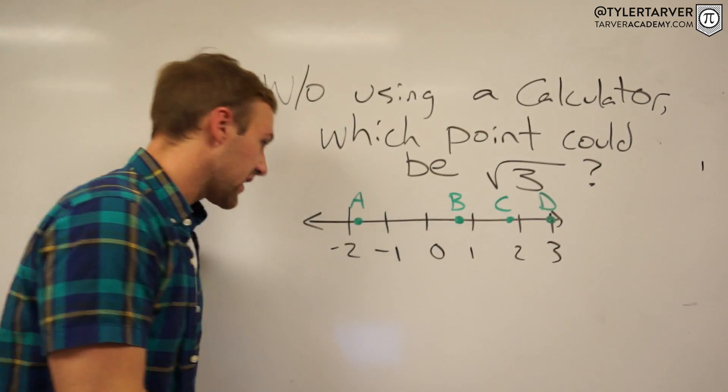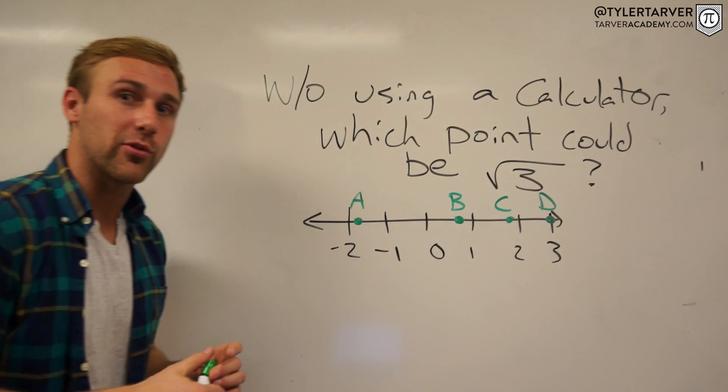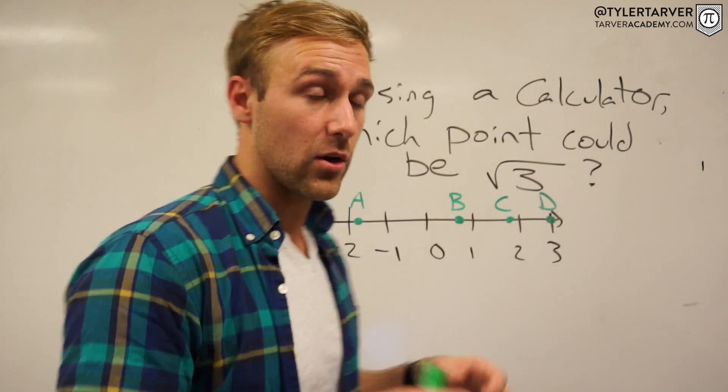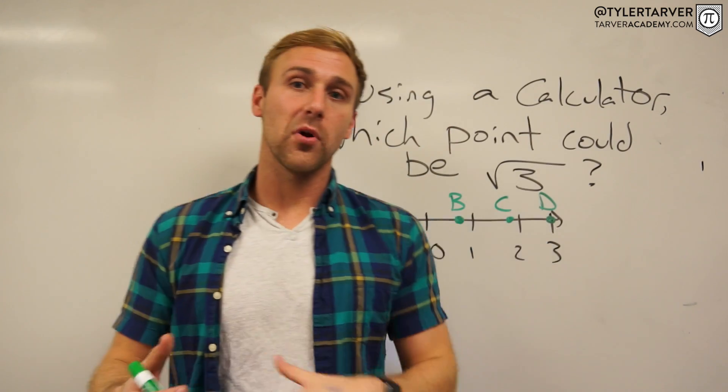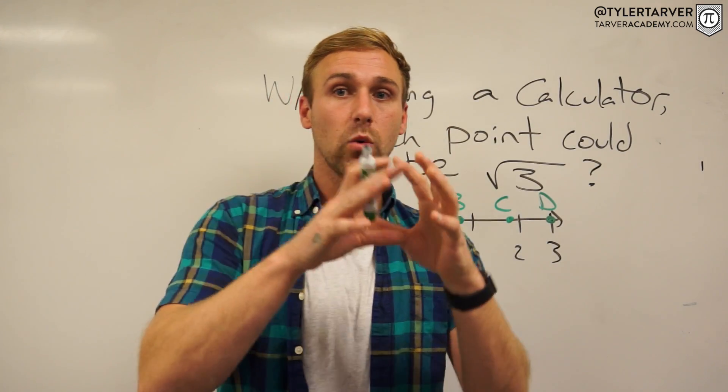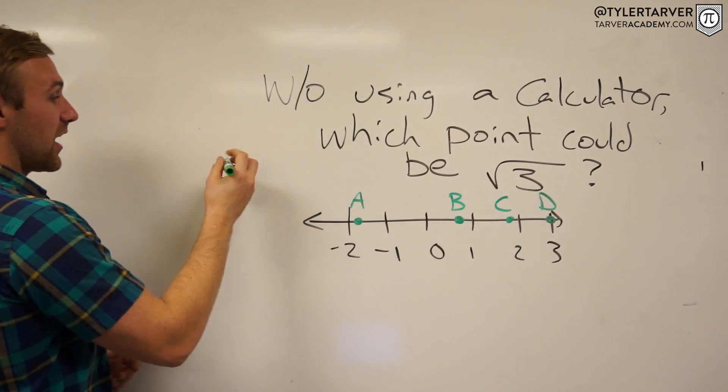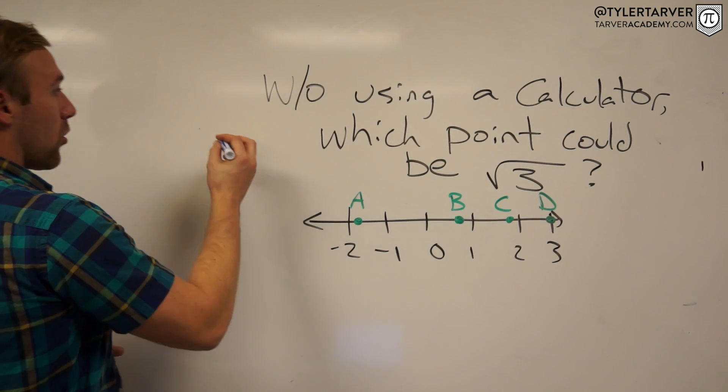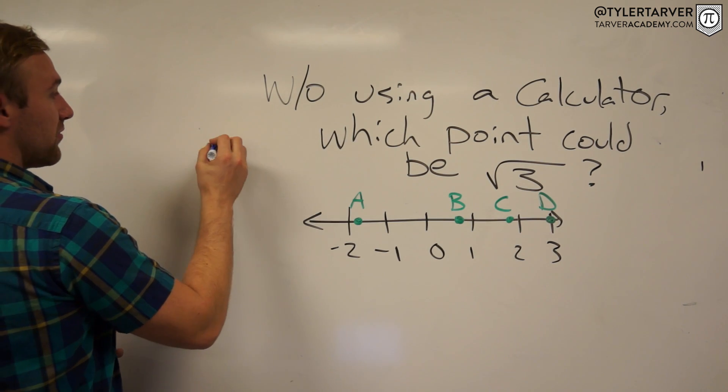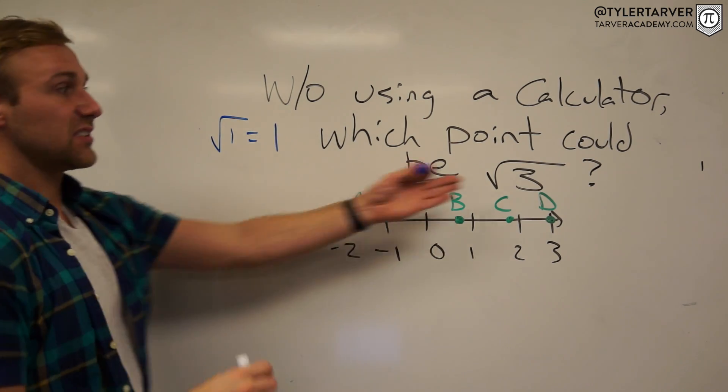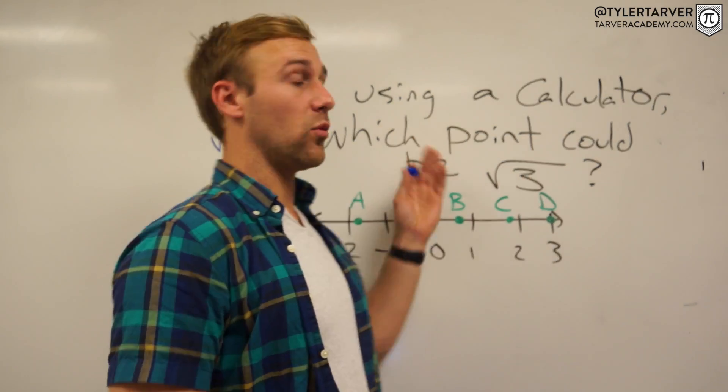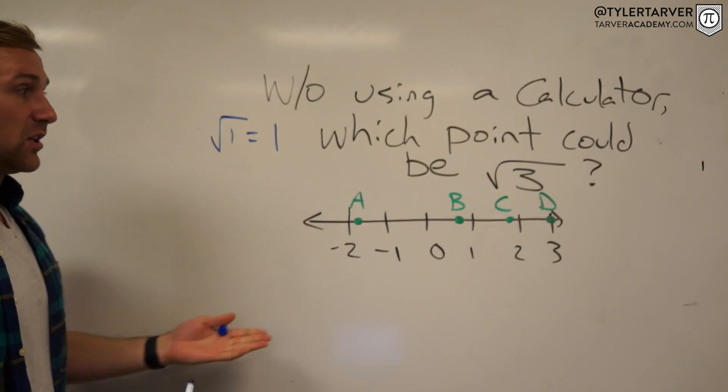So √3 means essentially what number times itself would equal 3. For instance, we got √1 equals 1. Well, this is going to be bigger than that because 3 is bigger than 1, so we know √3 is greater than 1.